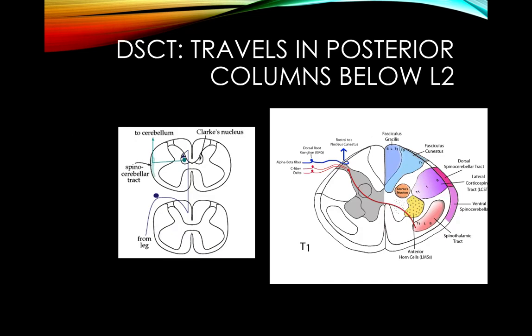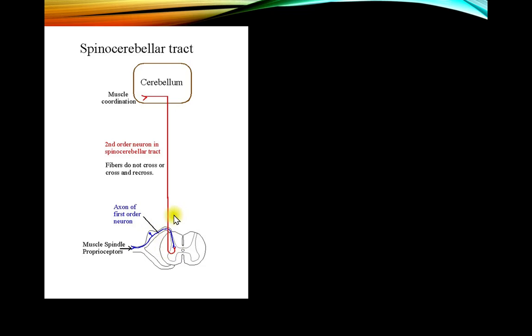The dorsal spinocerebellar tract carries information from the legs. It takes an unusual route: fibers travel up through the posterior columns alongside vibration and proprioception pathways, then synapse in Clark's nucleus. From there they move out laterally and ascend to the cerebellum as the dorsal spinocerebellar tract, located just lateral to the corticospinal tract. The general rule for spinocerebellar tracts is that they synapse in a nucleus and ascend on the same side without crossing to reach the cerebellum — so the left arm and leg talk to the left cerebellum.